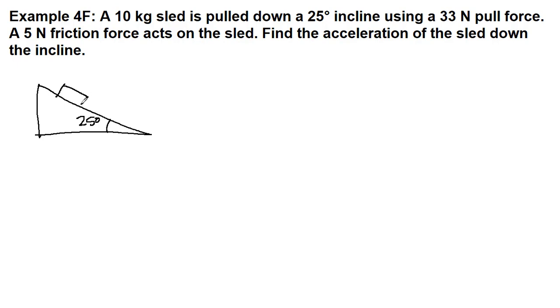So we have this sled. I'm just going to draw a box. And it's being pulled down an incline using a pull force. Because we are not told about any additional angle, it's going to look like this. So this pull force of 33 newtons is pulling the sled down the ramp. We're also told that there's a friction force, and that's going to be acting against the motion. So the friction is going to be acting uphill at 5 newtons. Our goal is to find the acceleration of the sled down the incline.